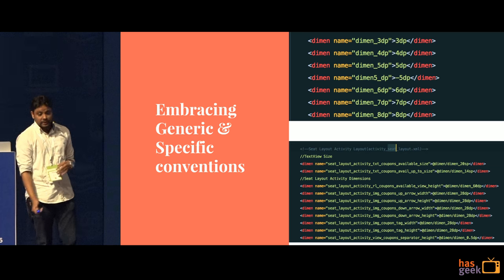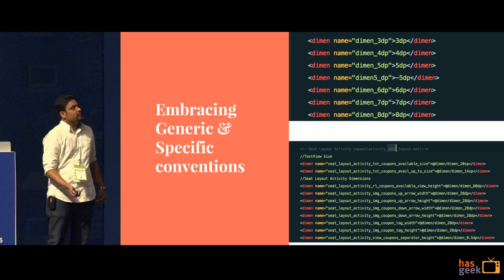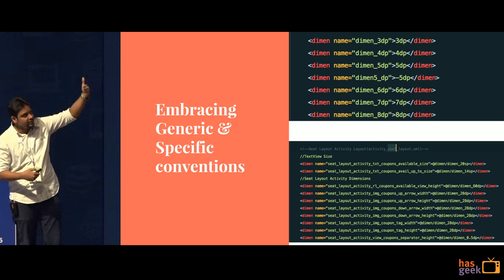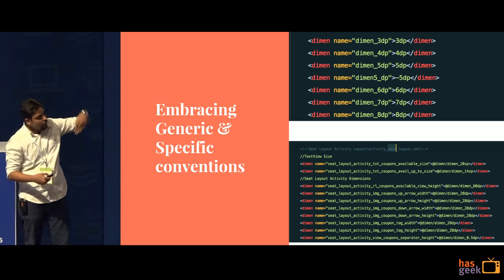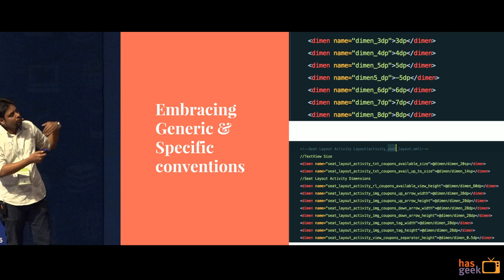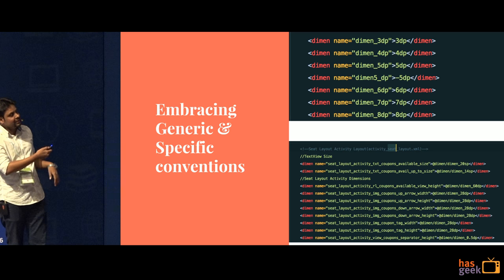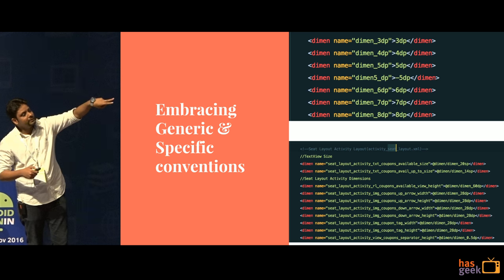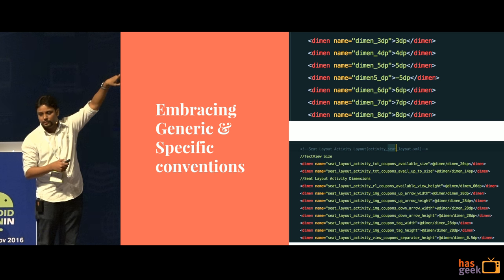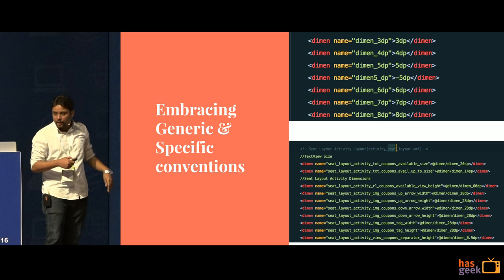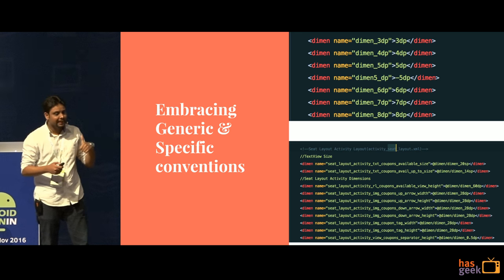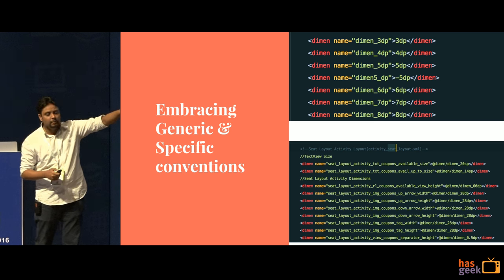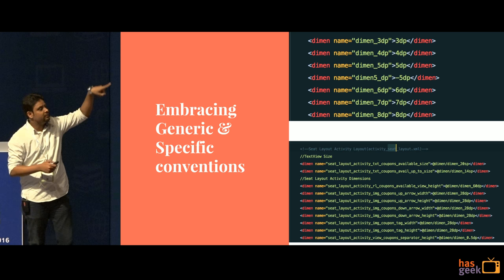Both have their own set of problems. The generic approach means if somebody is using font_small and tomorrow changes it from 12dp to 14dp, everybody who uses it breaks. The specific approach solves that problem but you end up with tons of duplicates — 16dp has been declared like 20 times because all of them are specific. What we did was embrace both: at the top we define dimension_3dp, dimension_4dp, dimension_5dp, and at the bottom we have specific naming which references those dimensions. This avoids duplicates — every dimension is declared exactly once and you still have the specific name for easy debugging.